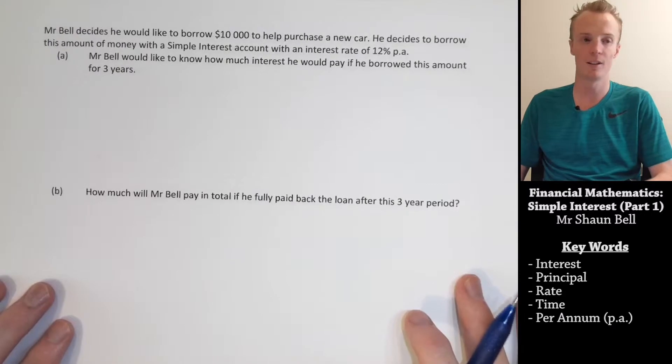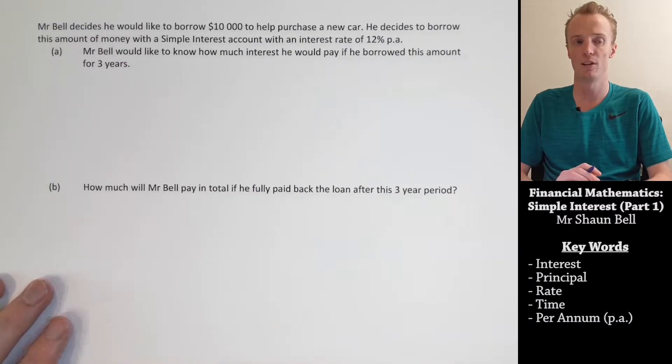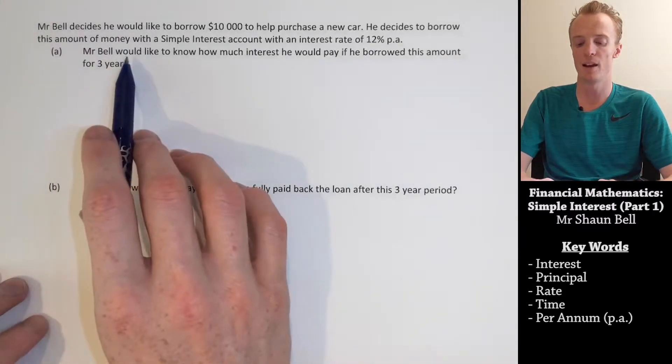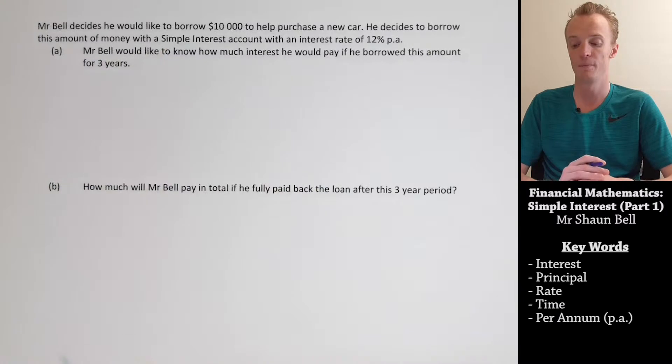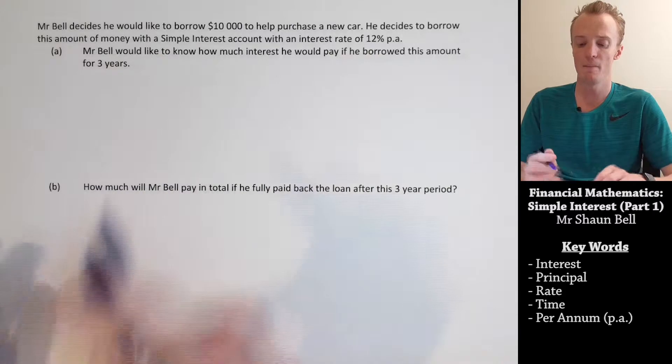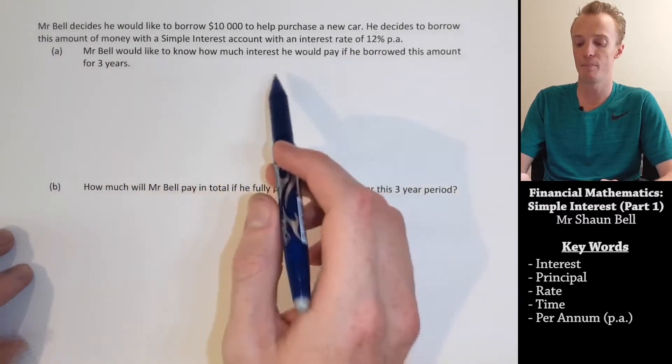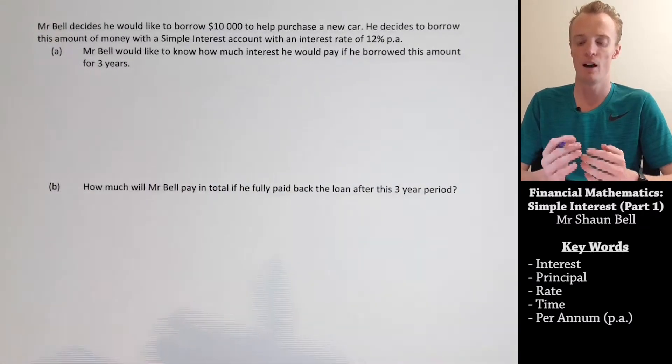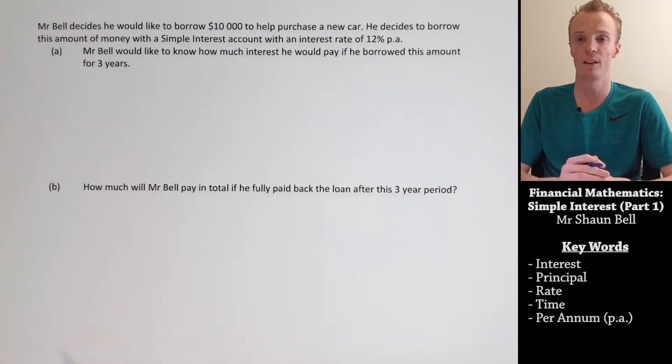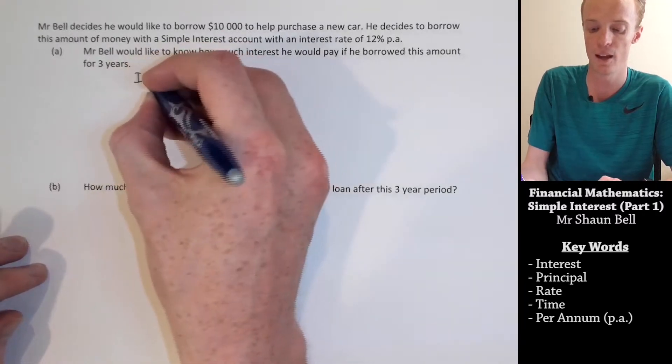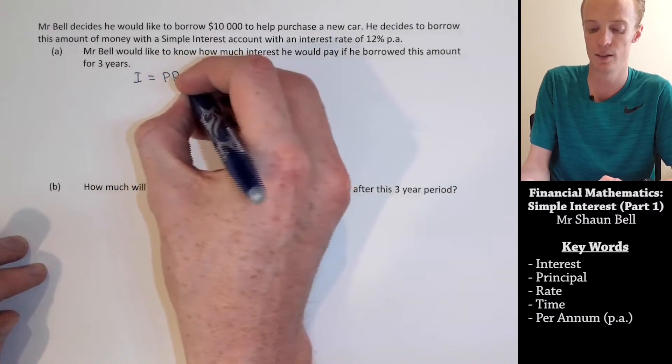Suppose that I decide that I'd like to borrow $10,000 from the bank to help purchase a new car. I decide to borrow this amount with a simple interest account that has an interest rate of 12% per annum. How much would I have to pay in interest if I paid it off in three years time? Well, to tackle this sort of problem, I always like to start by recording the simple interest formula, which is I equals PRT.